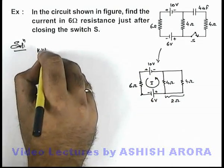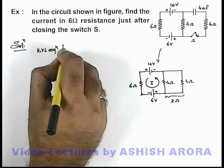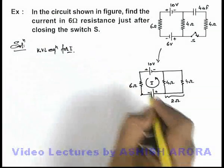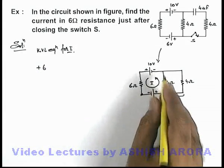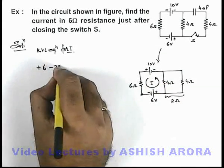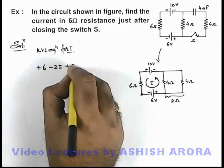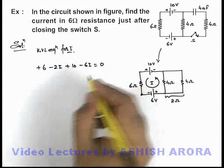So if we write the KVL equation for i: starting from this point, it'll be a gain of 6 volt potential, then minus 2i, then again a gain of 10 volt potential, then minus 6i, equals zero.